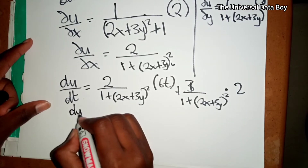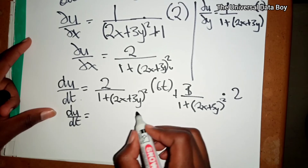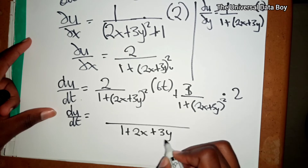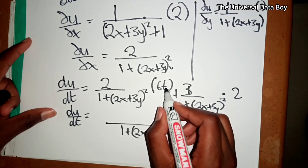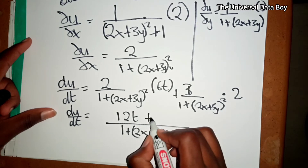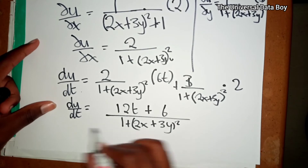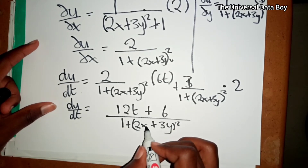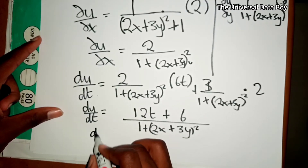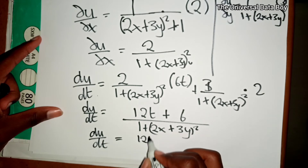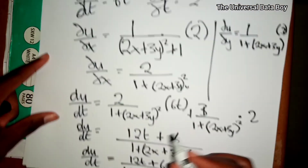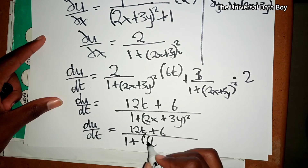Evaluating du/dt: the denominators are common, so we get 1 plus (2x + 3y) squared in the denominator. In the numerator, 2 times 6t gives 12t, plus 3 times 2 gives 6. Now substituting x = 3t², we replace 2x with 6t², giving du/dt = (12t + 6) over 1 plus (6t² + 3y) squared.